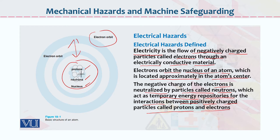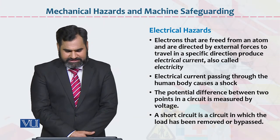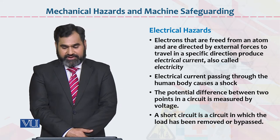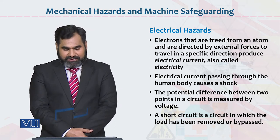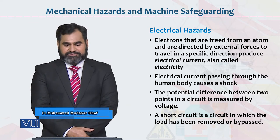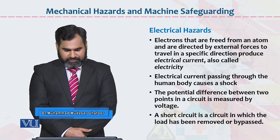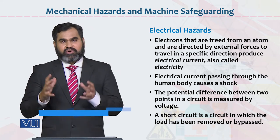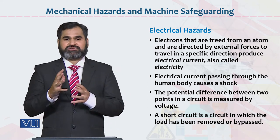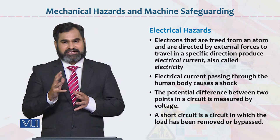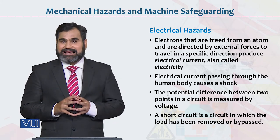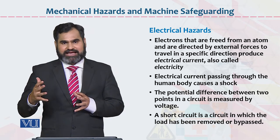Yeh technical terminology is mein use hui hai. Yeh jo electrical engineering mein bachon ko teach karte hain, lekin iski summary yeh hai ke organizations ke andar electricity ki waja se jo problem exist hoti hai, usko hum electrical hazards bolte hain. Electrons that are freed from an atom are directed by external forces to travel in a specific direction, producing electrical current, also called electricity. Electron ki waja se, uski movement ki waja se, electrical current paida hogi — us process ko hum electricity kehte hain.